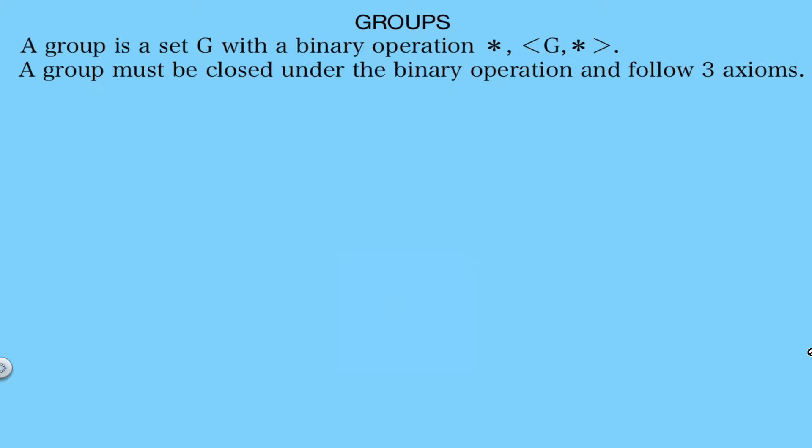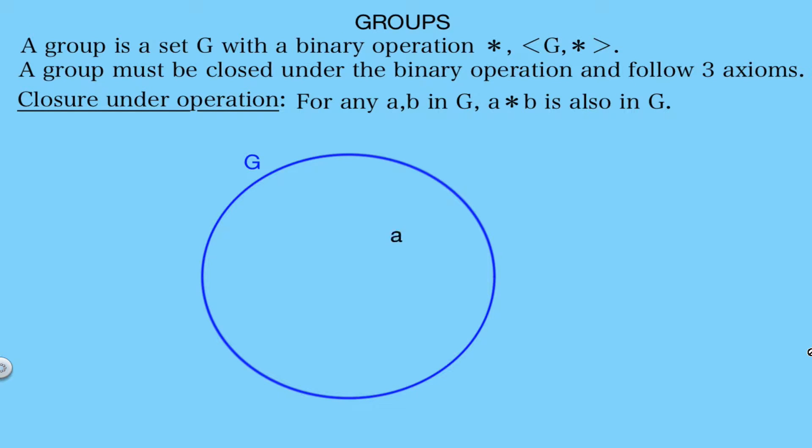So before I go into the axioms, I want to clarify what it means to be closed under the binary operation. It just means that for any A and B in the set G, A star B must also be in the set G. If A star B is outside the set G, then the set G cannot be a group. Sometimes people will consider this another axiom, but for the most part this is just assumed in the definition of a group. It might not always be explicitly stated, but it is definitely something you need to look out for.